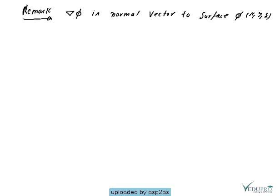You can say this is gradient phi, or gradient of the scalar function phi. It is always a normal vector to the scalar function phi, or say surface f(x,y,z). The normal vector is perpendicular to the surface phi.